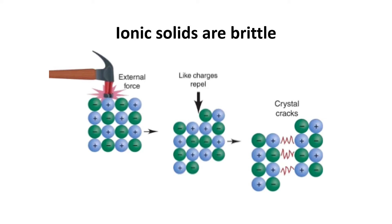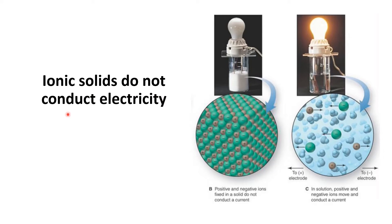The third property of ionic solids is that they are brittle. Brittle means the material is hard but when you hit it, it breaks easily. In ionic solids the ions are arranged in an alternating fashion to minimize repulsion. When this ionic solid is hit by a hammer, the layers slide over each other, causing like charges to come close together — positive ions near positive ions and negative ions near negative ions — resulting in repulsion, which causes the crystal to crack. This cracking is called brittleness.